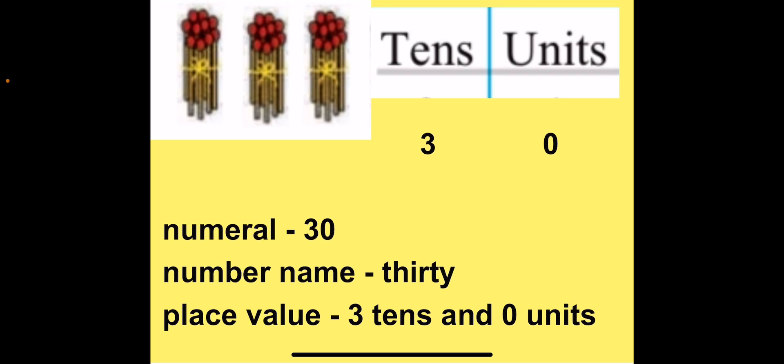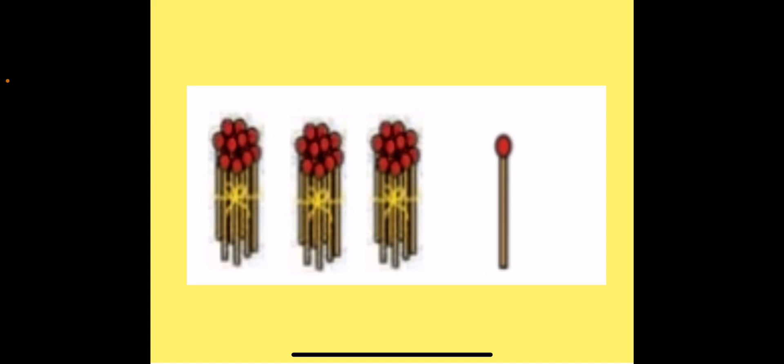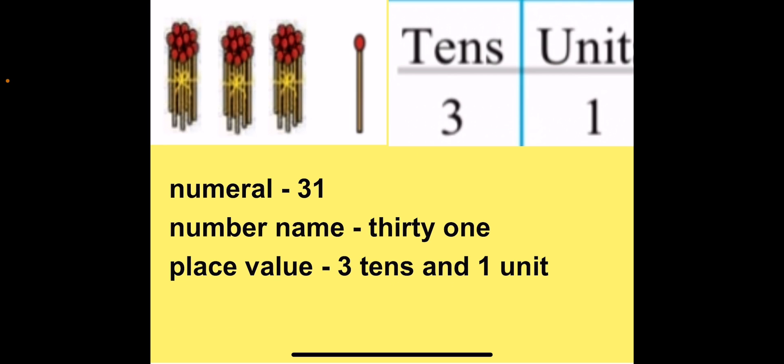Today we are going to learn numbers after 30. We have 3 bundles of 10s. When we add 1 unit to these 3 bundles, we get 3 tenths and 1 unit. So 3 tenths and 1 unit give us our next number, that is 31. The number name for 31 is THIRTY-ONE. Since 3 is in tenths place and 1 is in units place, the place value for 31 is 3 tenths and 1 unit.